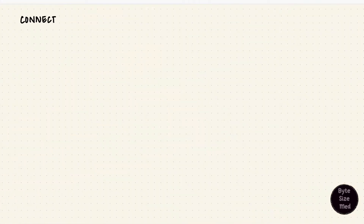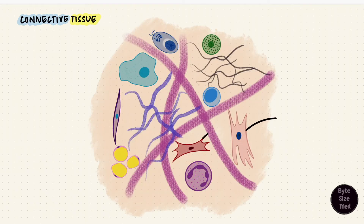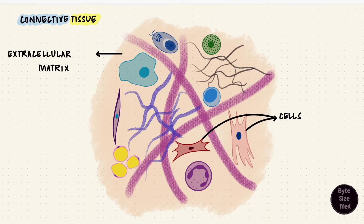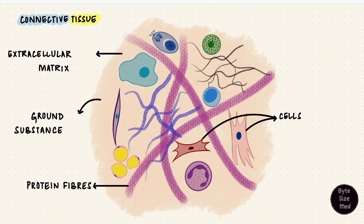Connective tissue is tissue that supports other tissue. It also anchors, binds, and connects cells, tissues, and organs. Depending on its location, it's got cells and an extracellular matrix. The extracellular matrix is ground substance with embedded protein fibers. So connective tissue has cells, fibers, and ground substance.